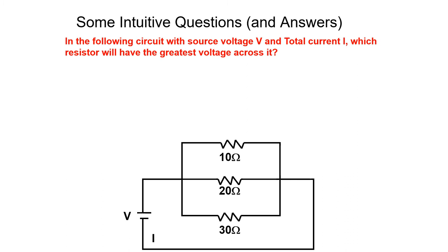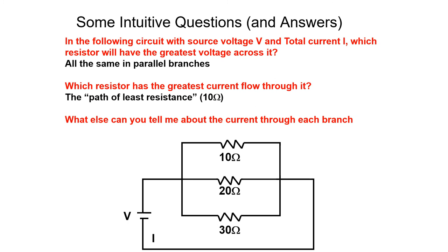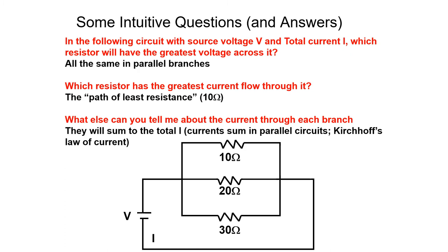In a parallel circuit with source voltage V and total current I, all three resistors have the same voltage drop across them — equal to the source voltage — because they are the only resistor in each of their respective parallel paths. The resistor with the greatest current flow through it is the one with the smallest resistance, since current takes the path of least resistance. The currents through all branches will sum to the total current, in accordance with Kirchhoff's current law, branching off at the junction and rejoining before re-entering the battery.